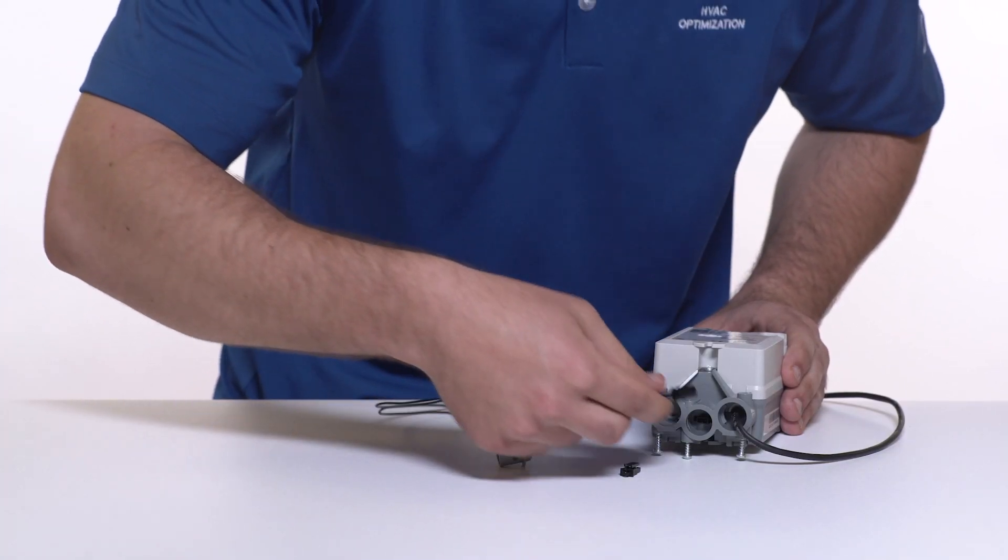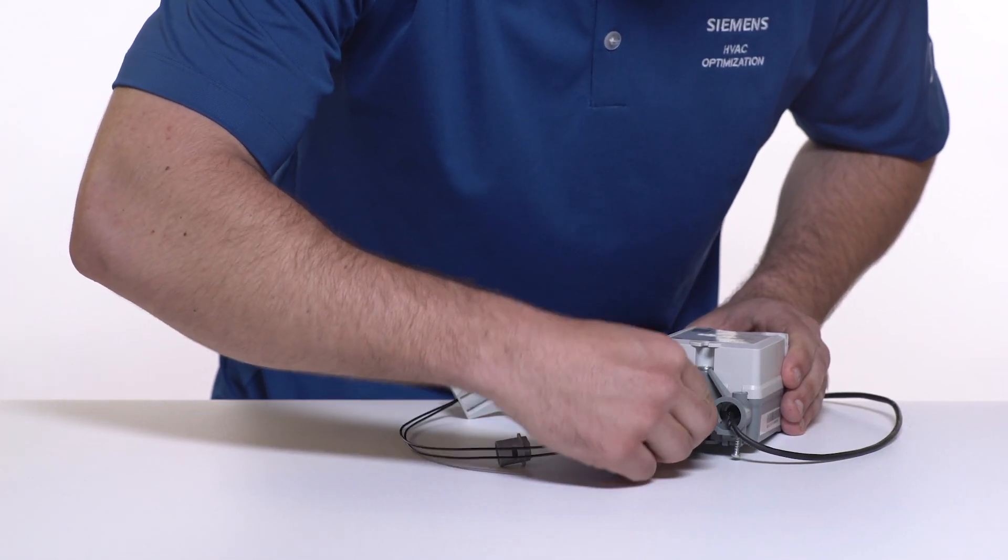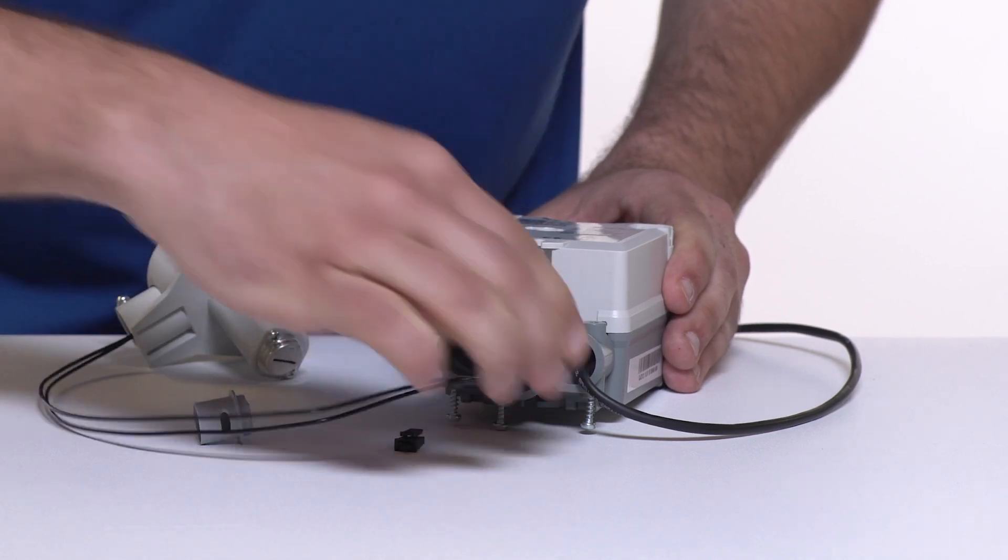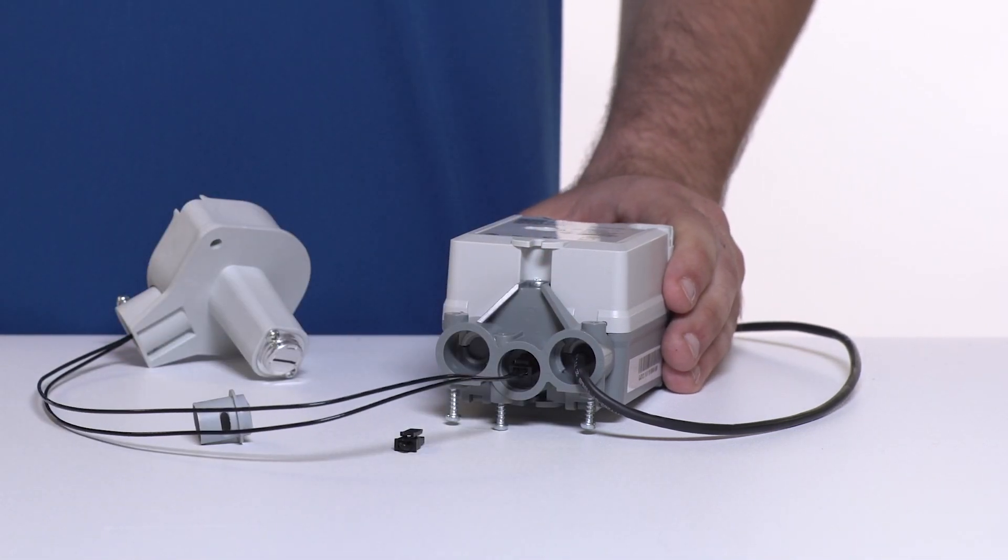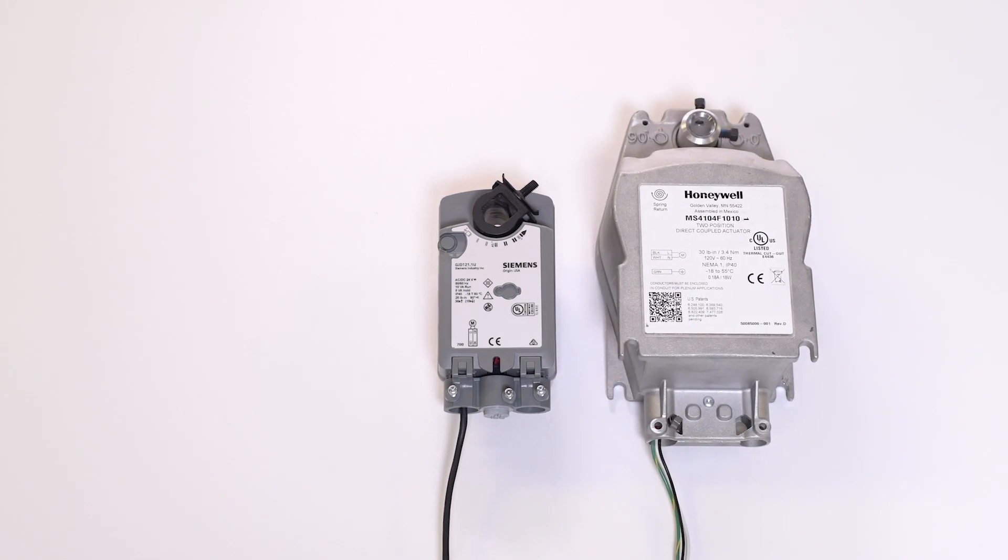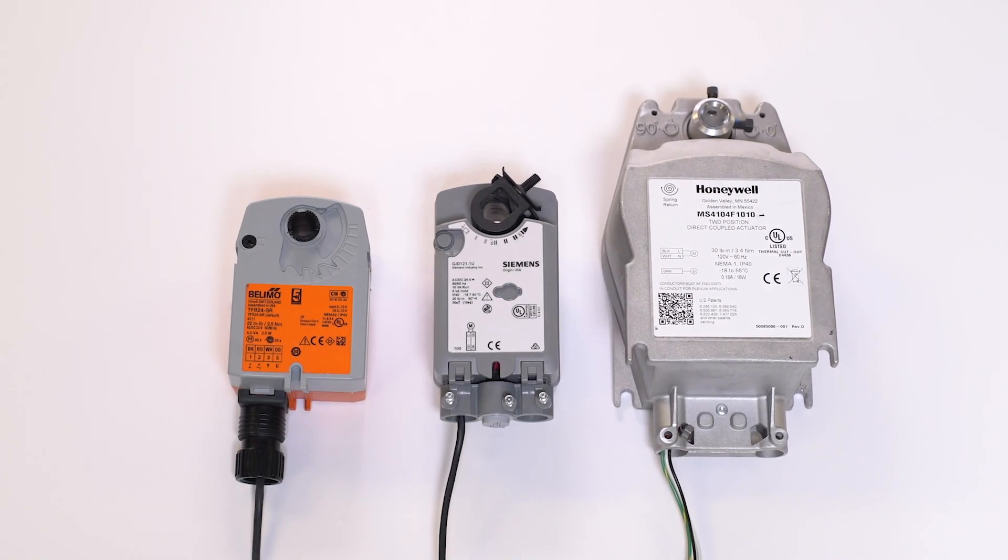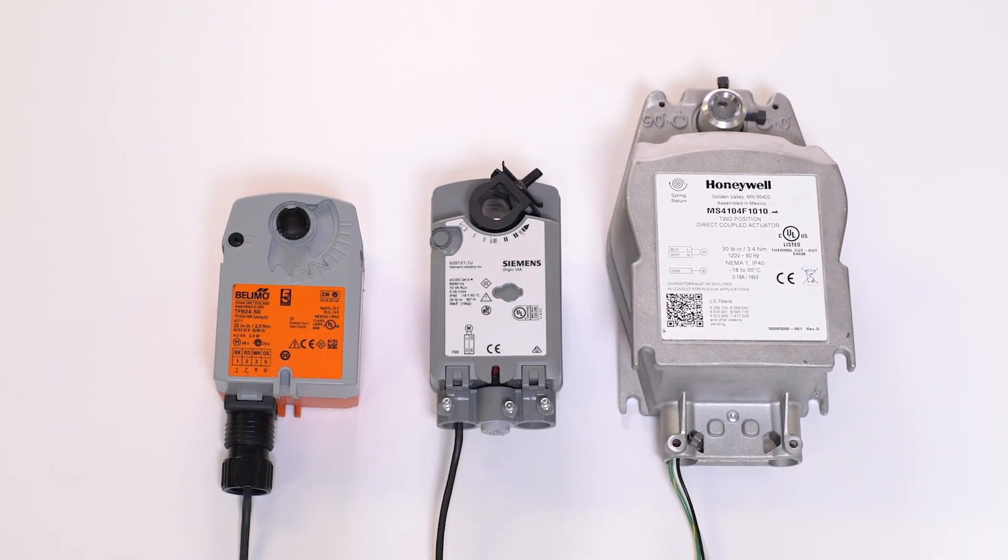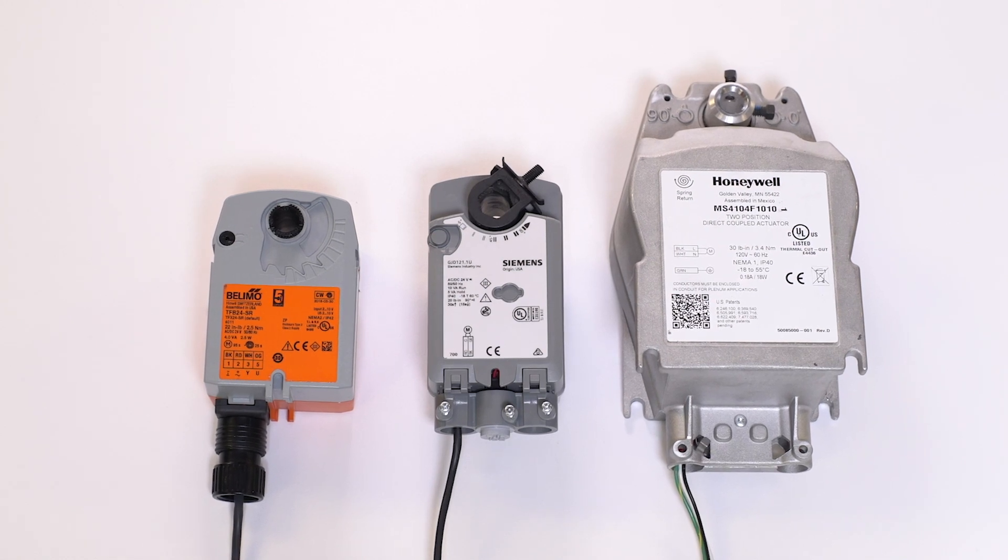The electronic fusible link has a quick connect plug for a reliable connection that's easy to install for improved protection. Other actuator brands are larger and require a separate fusible link that may need additional wiring or a junction box to be properly configured to code.